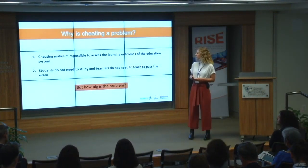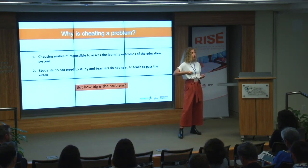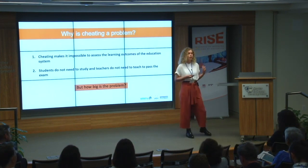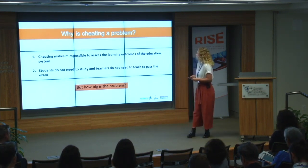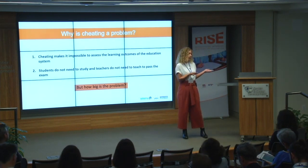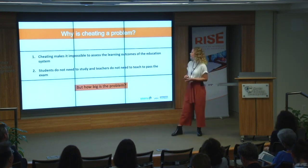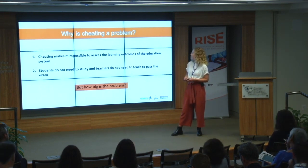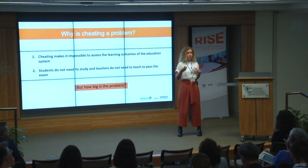I think everyone here will agree that cheating is bad and should not be happening. But I want to emphasize two things. First, when cheating happens at a large scale on national exams, you're not actually measuring learning — yet the national exam is one of the main information sources for government officials on how much learning the education system is producing. Second, when students and teachers already know they can cheat their way through, they may put less effort into studying and teaching. In Indonesia, exam pass rates are close to 100 percent, but according to PISA, 42 percent of 15-year-olds are functionally illiterate.